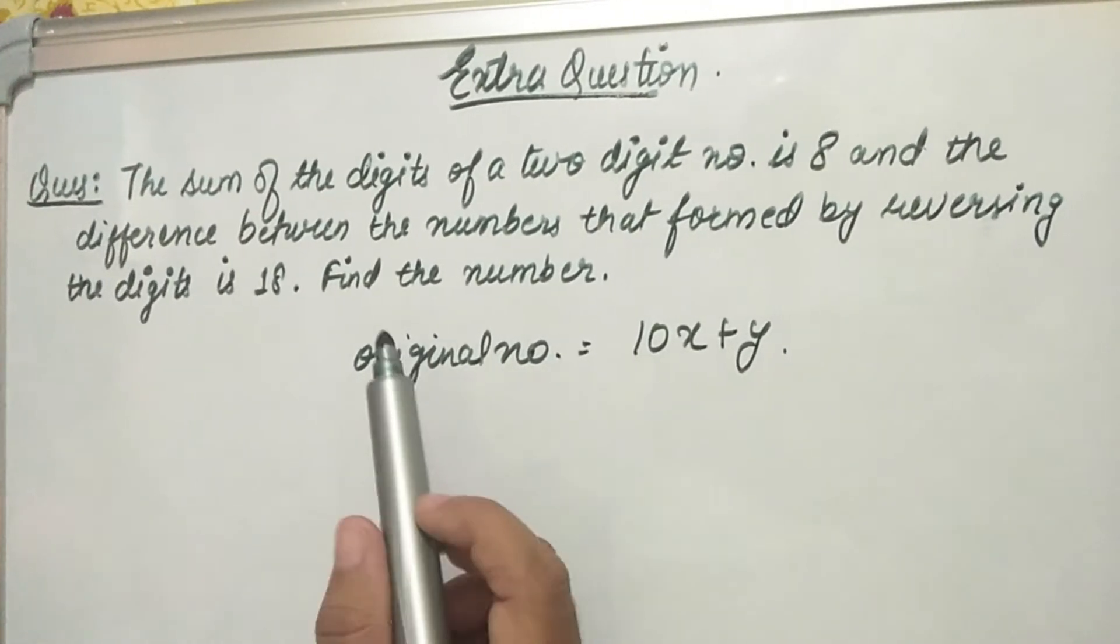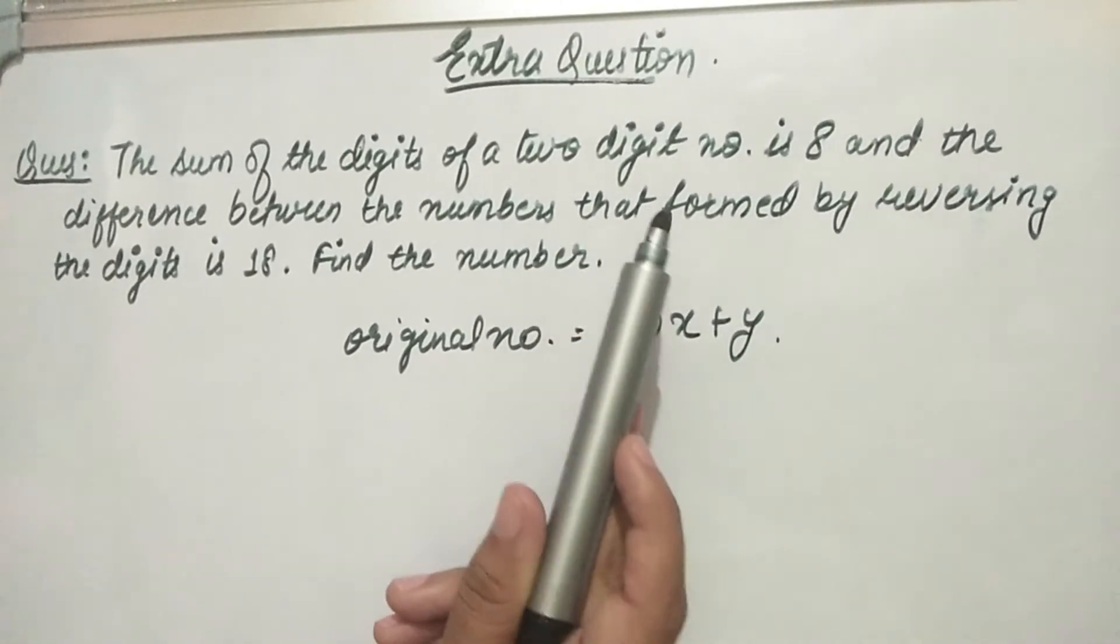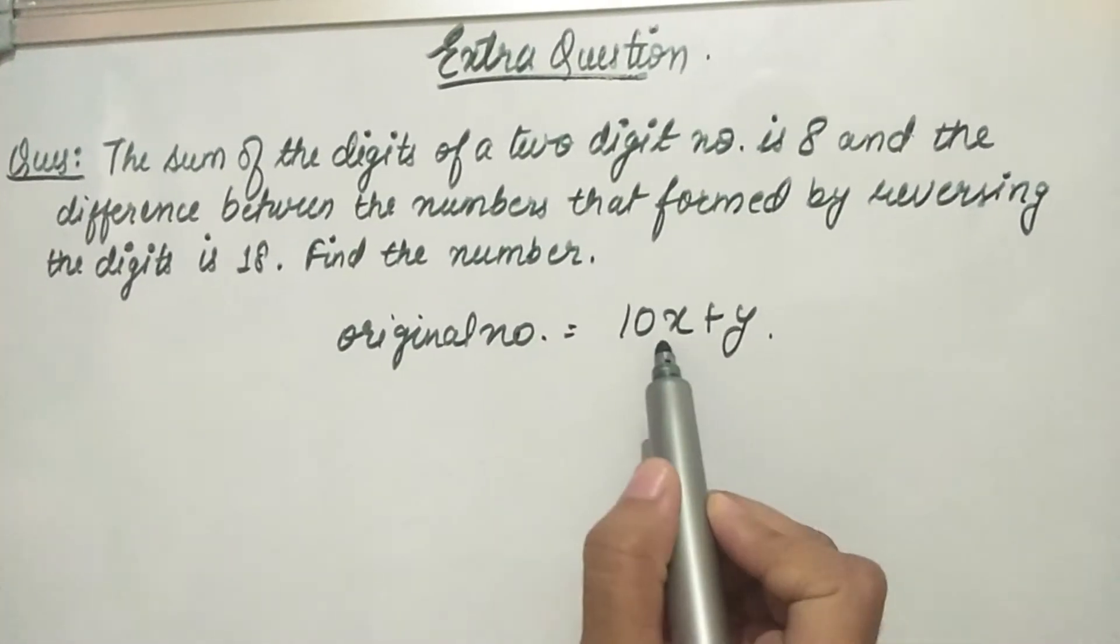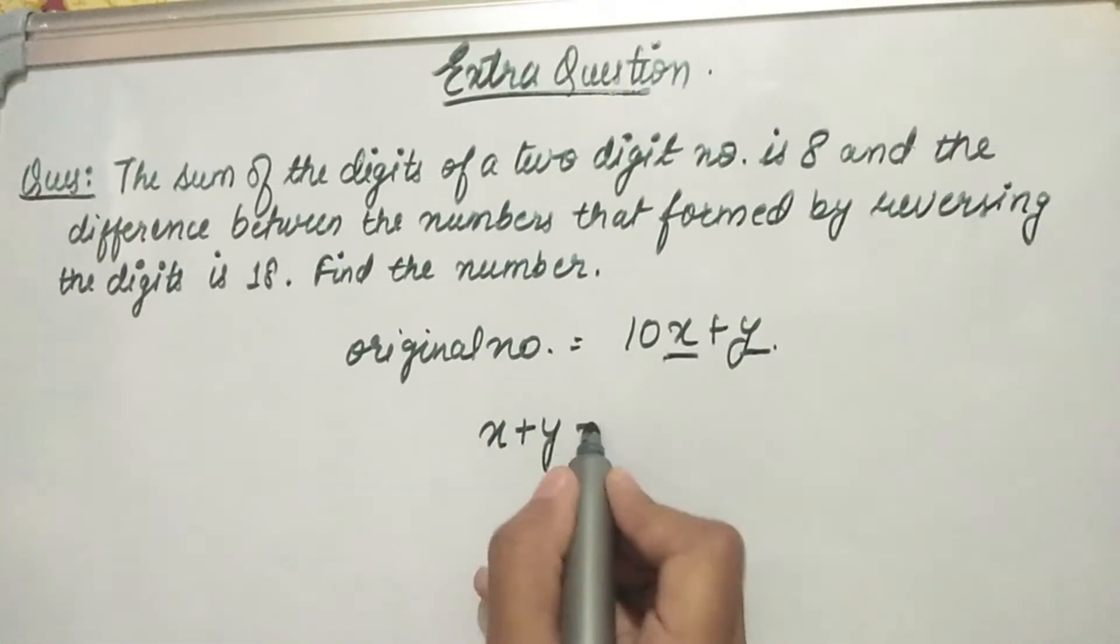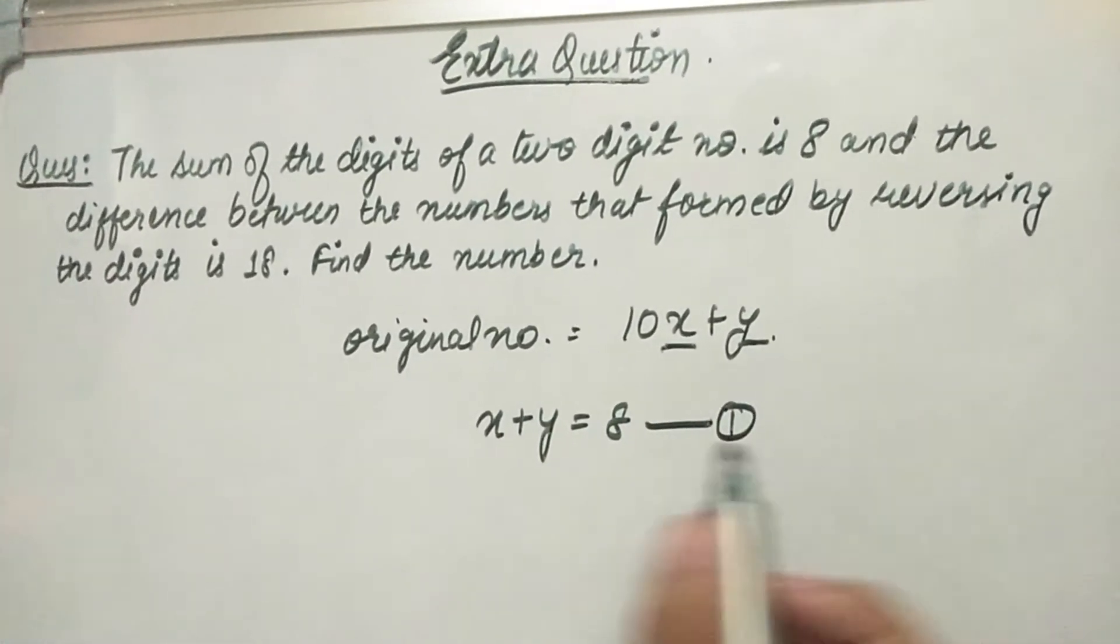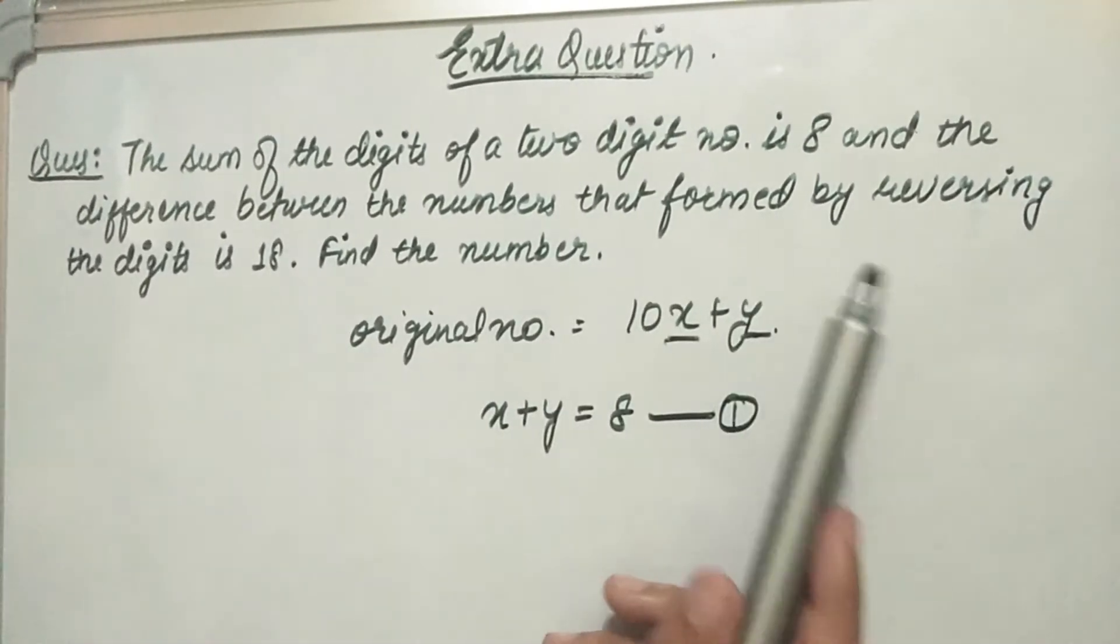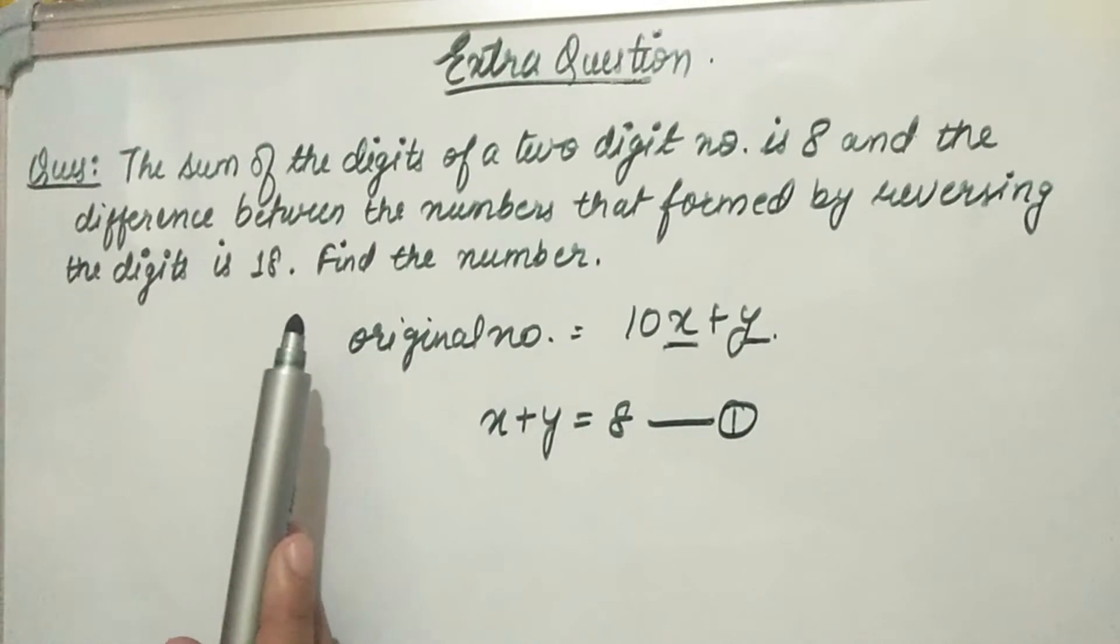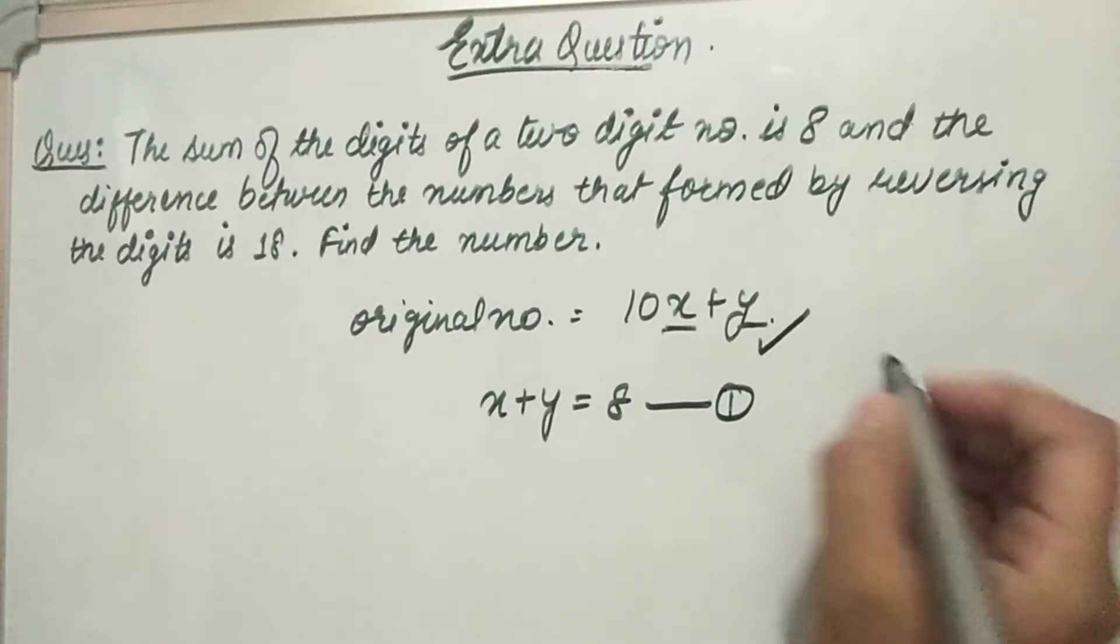We have the first equation: the sum of the digits of a two-digit number is 8, so x plus y equals 8. This is the first equation. And the difference between the numbers formed by reversing the digits is 18. So this is the original number; if we reverse this...